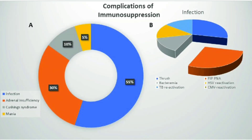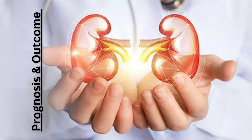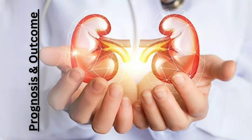Complications of immunosuppression include infections such as Pneumocystis jirovecii pneumonia, reactivation of tuberculosis, reactivation of cytomegalovirus or herpes simplex virus, and bacteremia. Additional complications include thrush, adrenal insufficiency, Cushingoid syndrome, and steroid-induced psychosis.